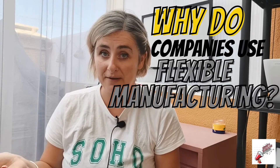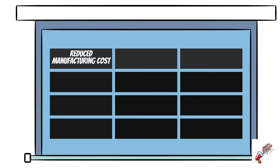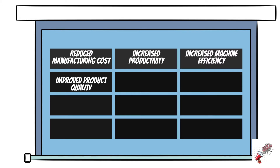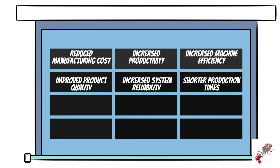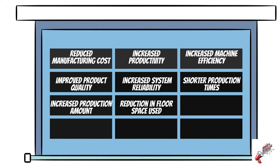So why do companies use flexible manufacturing? Some of the advantages could be: reduced manufacturing costs, increased productivity, increased machine efficiency, improved quality, increased system reliability, shorter production times, increased production amount, reduction in floor space use, reduced staff requirements, and reduced errors.